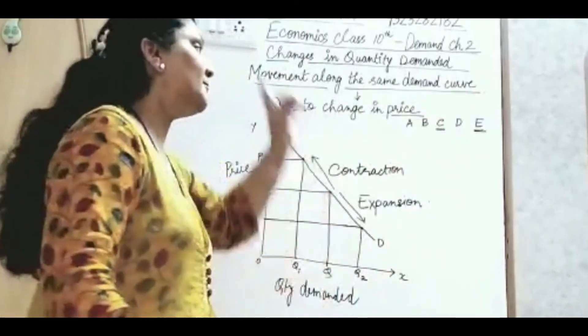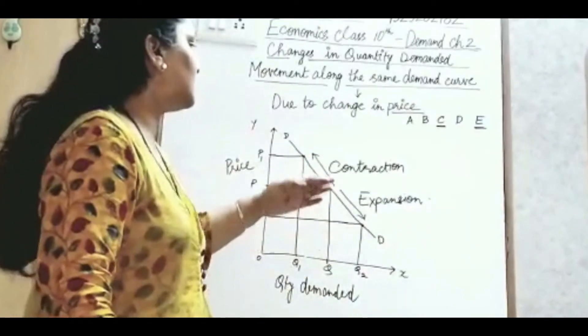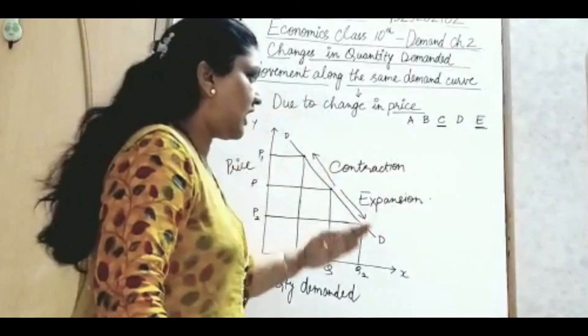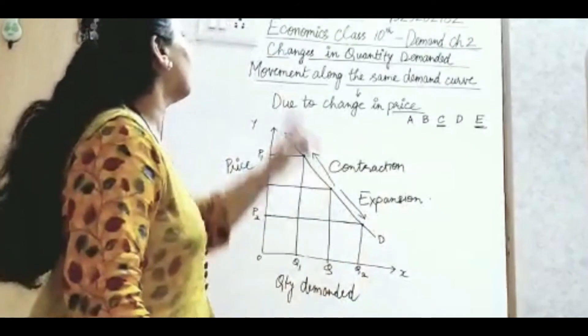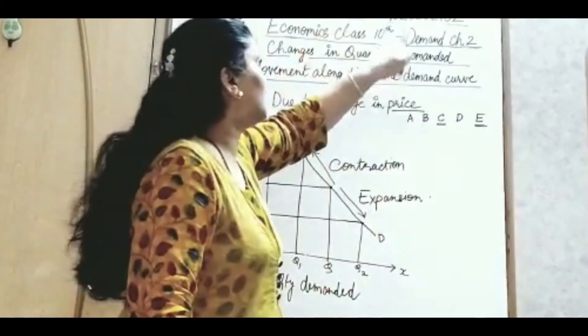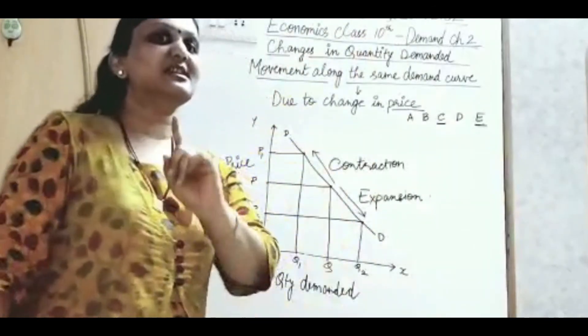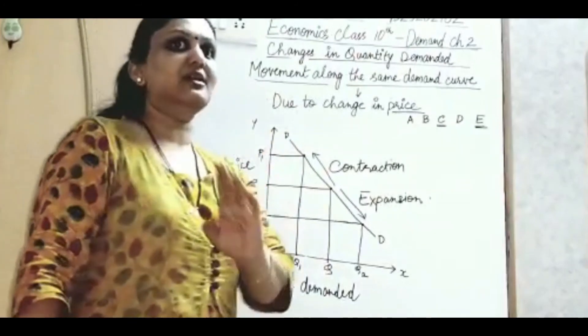This is just a way to remember. First, understand the logic and then remember this. Upward movement on the same demand curve, contraction. Downward movement on the same demand curve, expansion. It is called as changes in quantity demanded. Movement along the same demand curve. Reason is only one, change in price. Other things being constant.